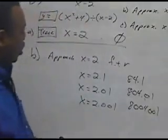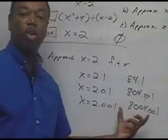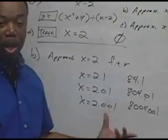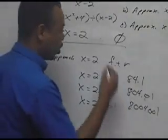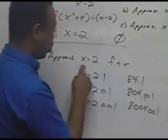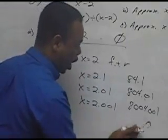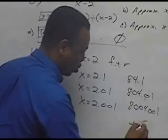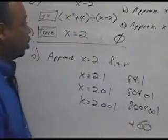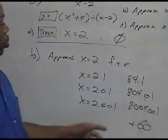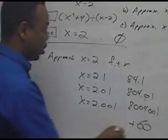These numbers are getting larger and larger. When values grow larger in a positive direction, we say the limit as we approach 2 from the right is positive infinity. So as x approaches 2 from the right, the answer is positive infinity.